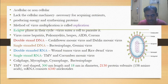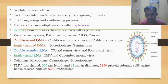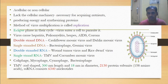Virus is acellular — they don't have a cell, they are non-cellular. They have a lack of cellular machinery. They don't have protoplasm, endoplasm, reticulum, or ribosomes — everything is absent. These cellular components are necessary for acquiring nutrients, producing energy, and synthesizing protein.